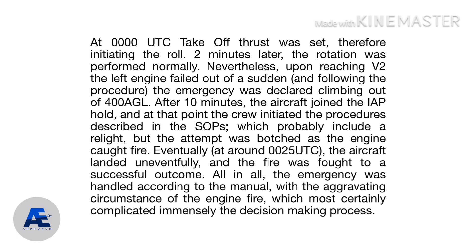At 0000 UTC takeoff thrust was set, therefore initiating the roll. Two minutes later, the rotation was performed normally. Nevertheless, upon reaching V2, the left engine failed out of a sudden, and following the procedure the emergency was declared climbing out of 400 feet AGL. After 10 minutes, the aircraft joined the initial approach point hold, and at that point the crew initiated the procedures described in the SOPs, which probably include an engine relight, but the attempt was botched as the engine caught fire. Eventually at around 0025 UTC the aircraft landed uneventfully and the fire was fought to a successful outcome. All in all, the emergency was handled according to the manual, with the aggravating circumstance of the engine fire, which most certainly complicated immensely the decision-making process.